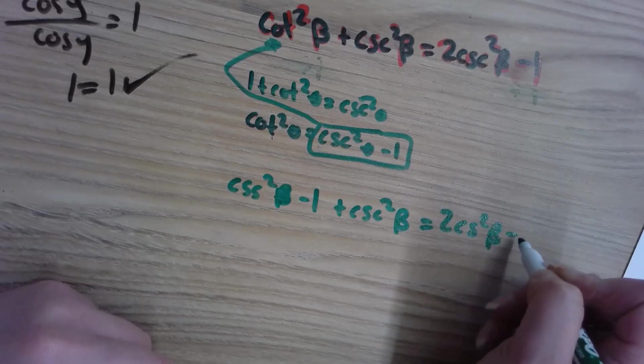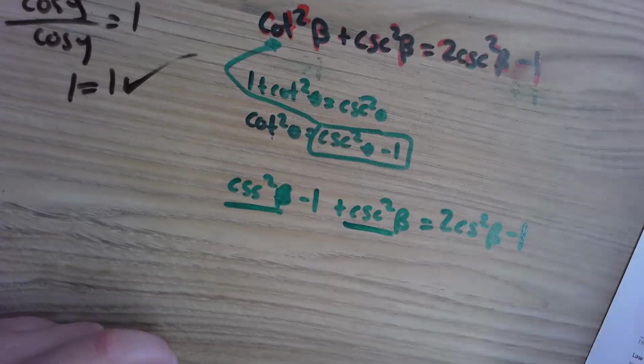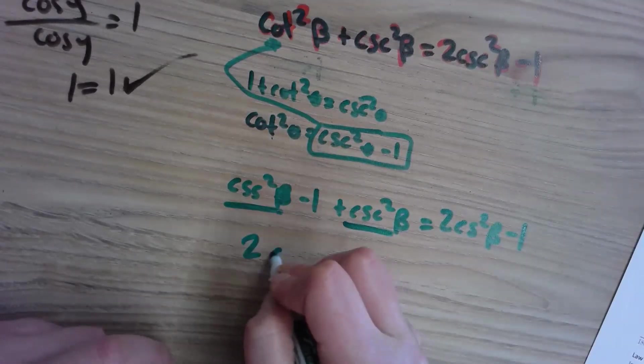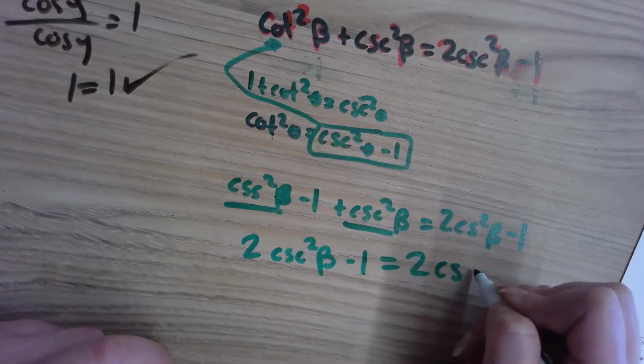That actually worked out really nice because if I add those two together, they're like terms. We get two cosecant squared beta minus one equals two cosecant squared beta minus one, and that works.